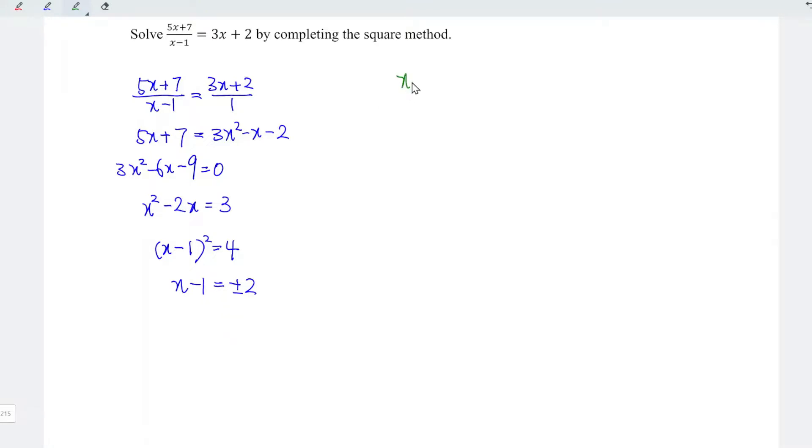Firstly, x minus 1 is equal to minus 2. Or x minus 1 is equal to plus 2. Lastly, let's solve for x. For the first equation, we can plus 1 for both sides. So minus 1 plus 1 is equal to 0. 0 plus x, we get back x. And this is equal to minus 2 plus 1, which is minus 1.